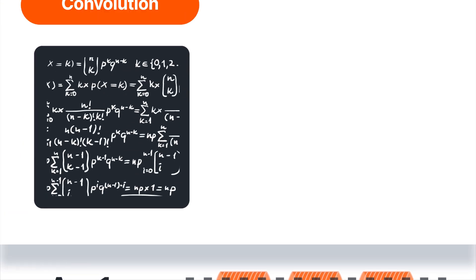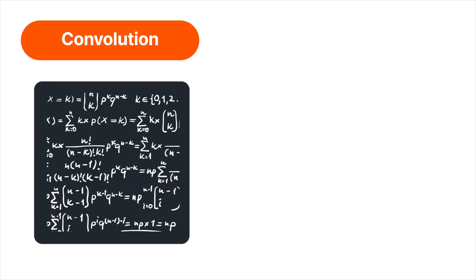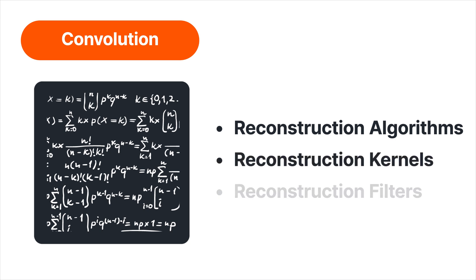Once this information is compiled together through interpolation, the next step is convolution. Convolution is the process through which the scan data is mathematically filtered to better visualize specific tissue types. And unfortunately, there's lots of different names for these mathematical filters. They're sometimes called reconstruction algorithms, reconstruction kernels, or even reconstruction filters. The key word in all of these is reconstruction.